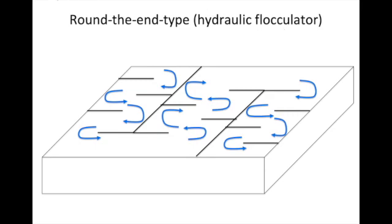Imagine the water comes from the coagulation process and enters the flocculation tank from this side. It then travels in the tank from one channel to another until it exits from this side to go to the sedimentation process.